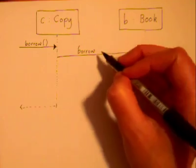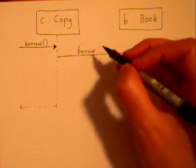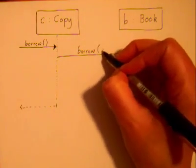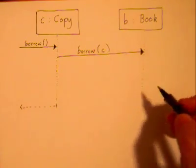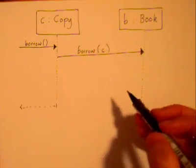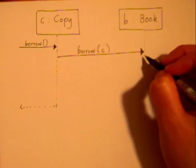And unoriginally, we're also going to call this borrow. I think it might be slightly different in using UML. And it's going to send itself C as an argument because it's going to say, Hey book, I've been borrowed.